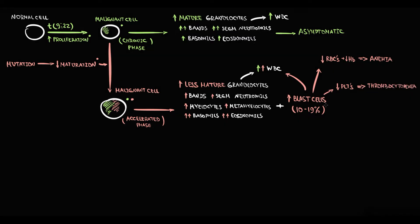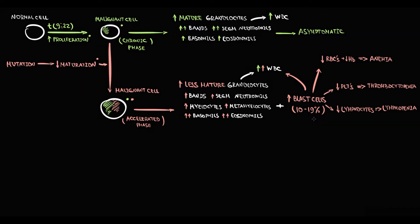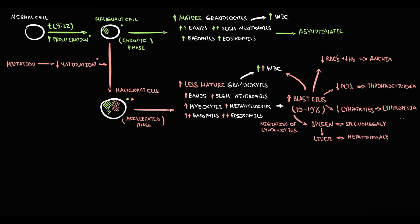Blast cells also crowd out lymphoid cells from the bone marrow, decreasing lymphocyte production so lymphopenia develops. Additionally, increasing blast cells force lymphoid cells to leave the bone marrow and migrate to the spleen. The increasing amount of cells in the splenic tissue causes splenomegaly. After cells migrate to the liver, the increasing amount of cells in the liver causes hepatomegaly.